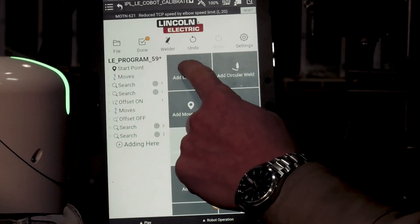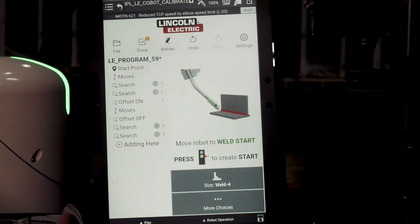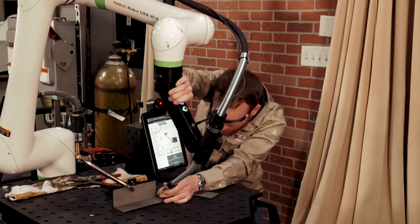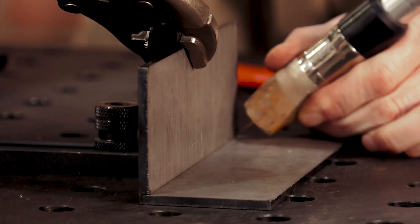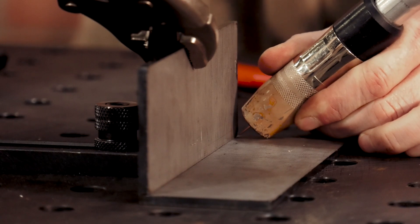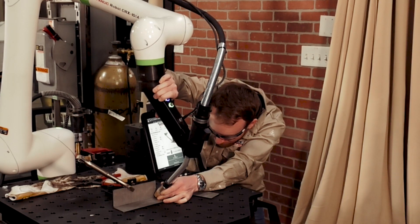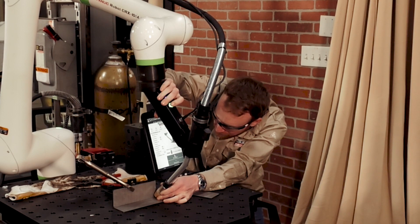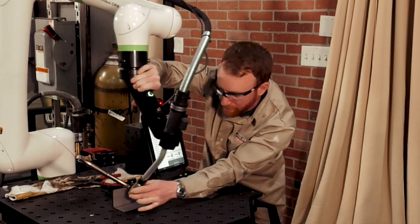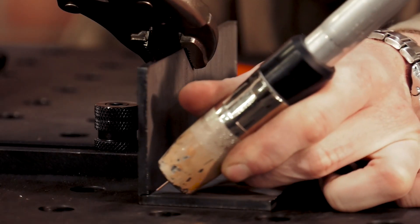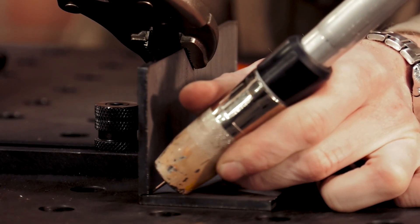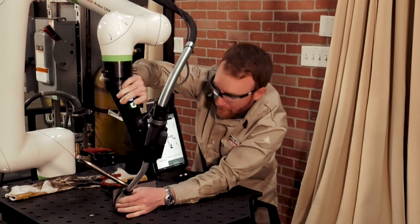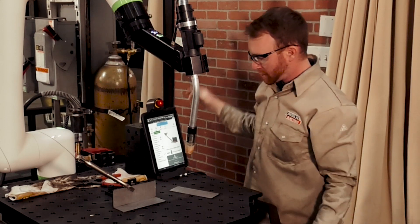And then we're going to go ahead and add a linear weld. So now we're going to just do a weld just like regular. So we'll move this over to the start point. There we go, that's a little better angle. Boom. Press the green button once for the start weld, and then we'll click and hold the green button to end the linear weld. And we just move it out.